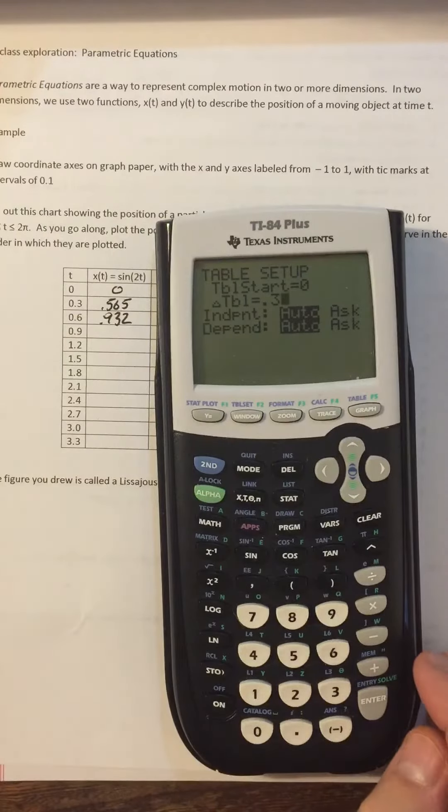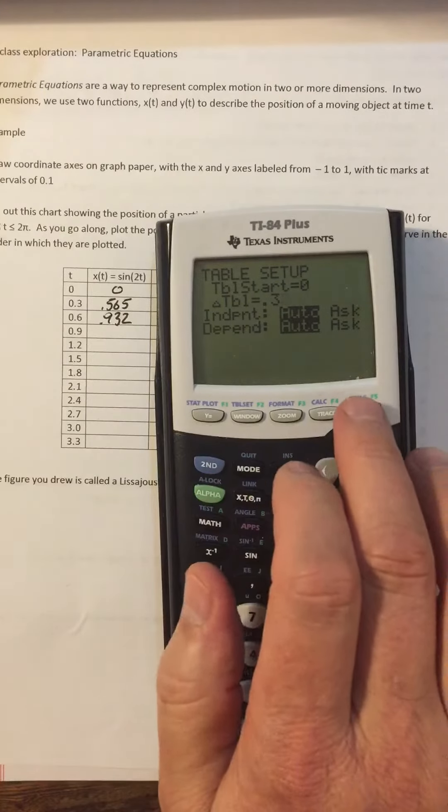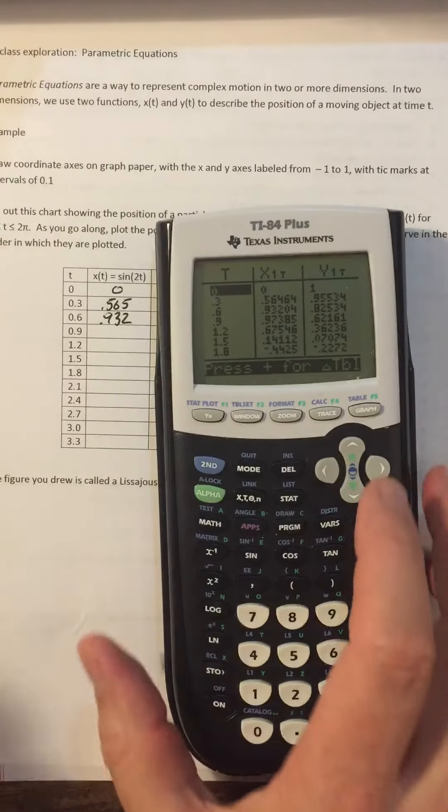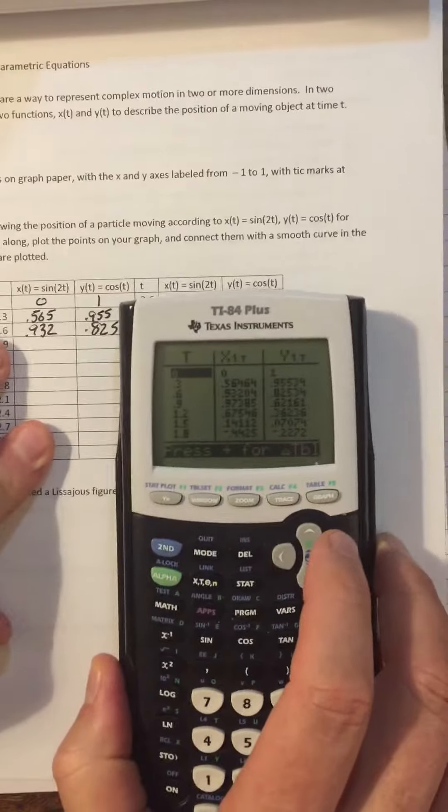So 0.3 is my delta table. Now I just go 2nd table, and it gives me a table, and we see all the values that I wanted to see.